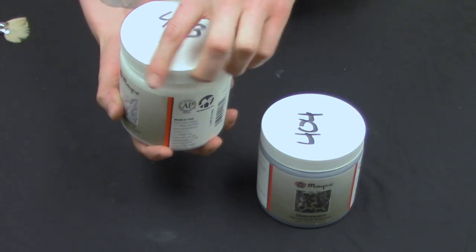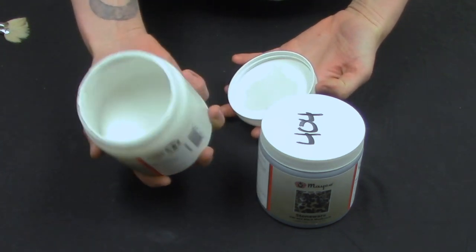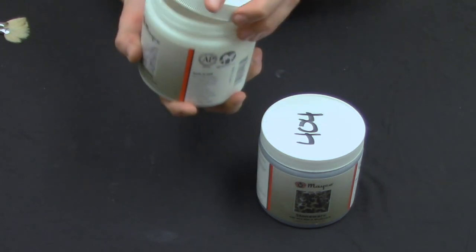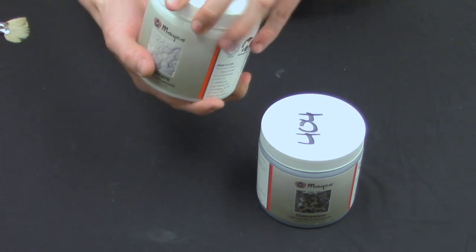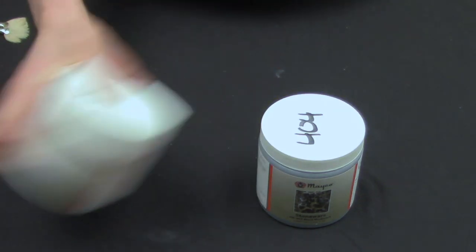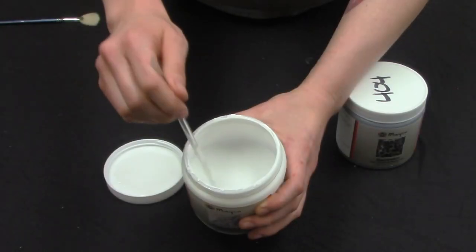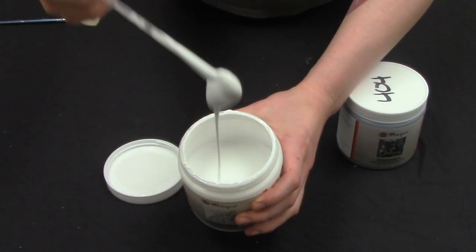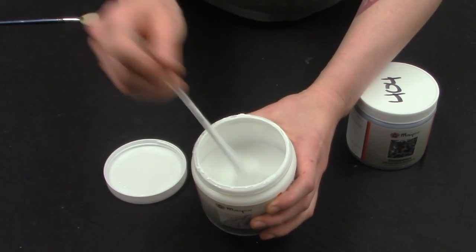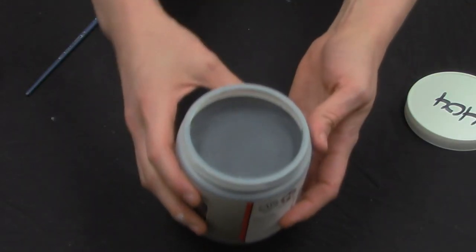You're going to notice that the glaze is somewhat gelatinous, kind of a solid glob. To alleviate that, all you have to do is shake it pretty vigorously, and that will make the glaze a lot more fluid. As you can see here, the glaze is much more fluid once I've shaken it.